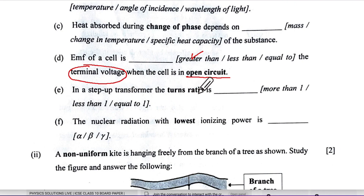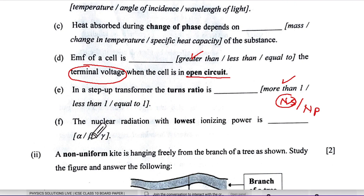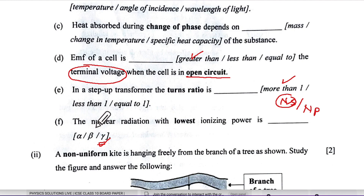In a step-up transformer, the turns ratio Ns/Np is greater than one, meaning the secondary has more turns. For nuclear radiation with the lowest ionizing power, the answer is gamma radiation — it has no particle, only electromagnetic waves, so it has minimum ionizing power. That completes the fill-in-the-blanks section.